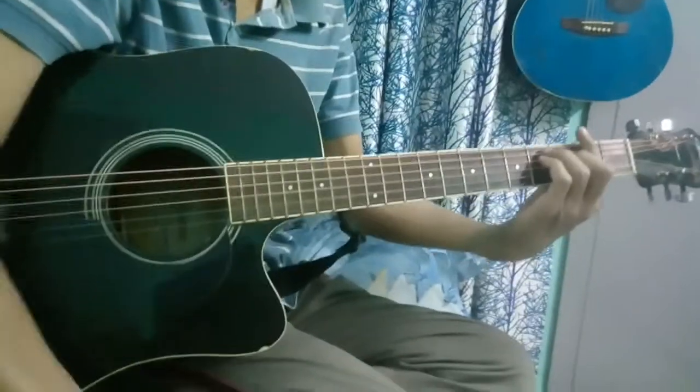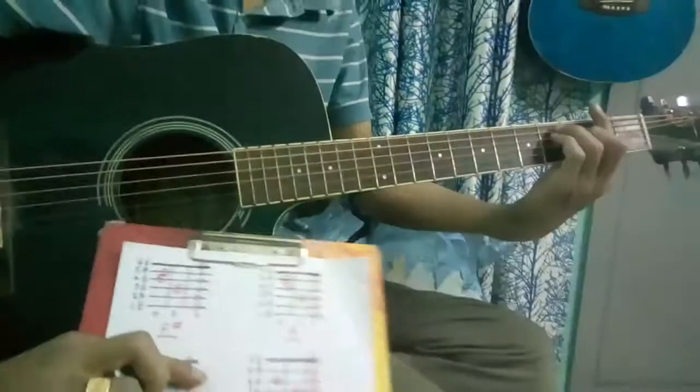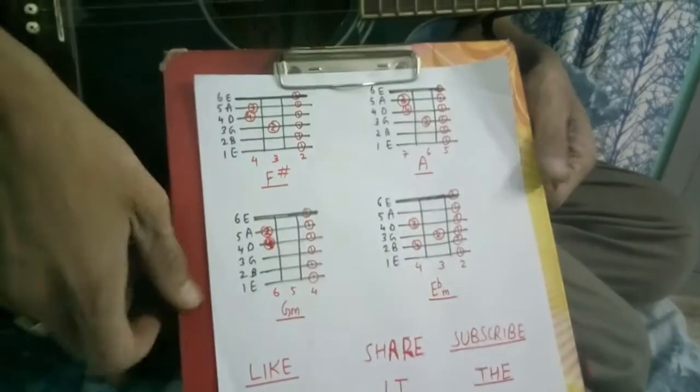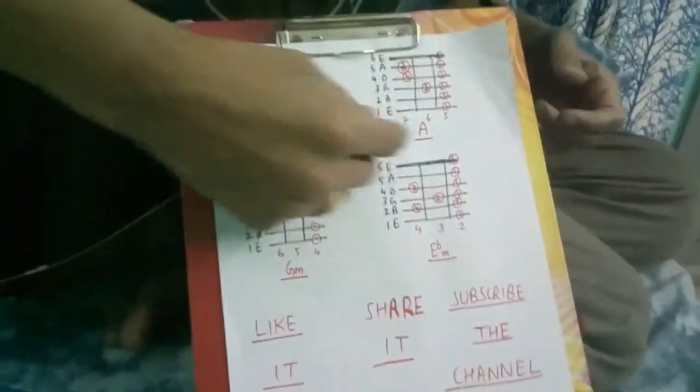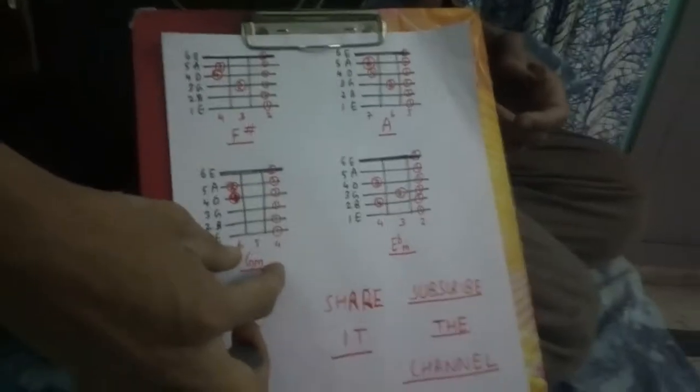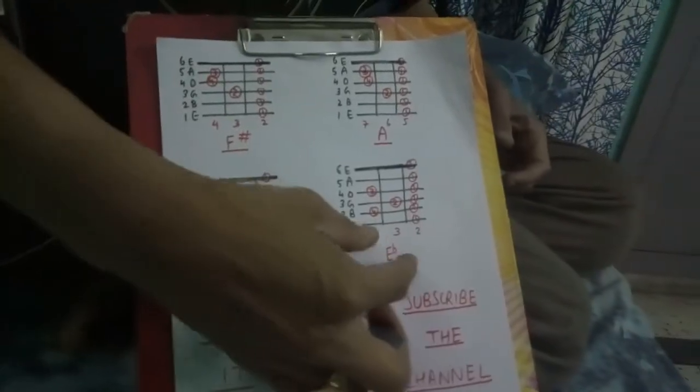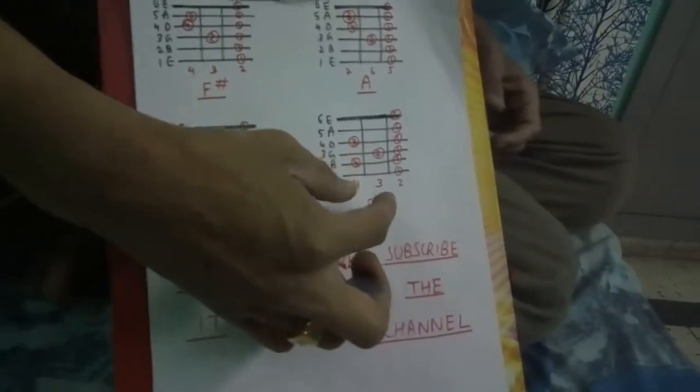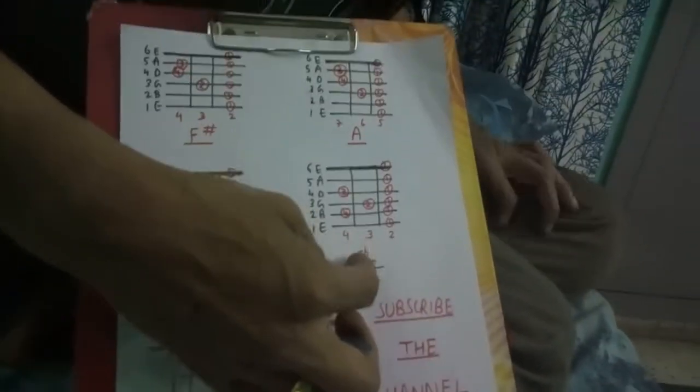Hello friends, today I'm telling you how to play the song Osathire. In this song, four chords have been used: the first one is F sharp, another is E major, the third one is G minor, and the last chord used in the song is E flat minor.